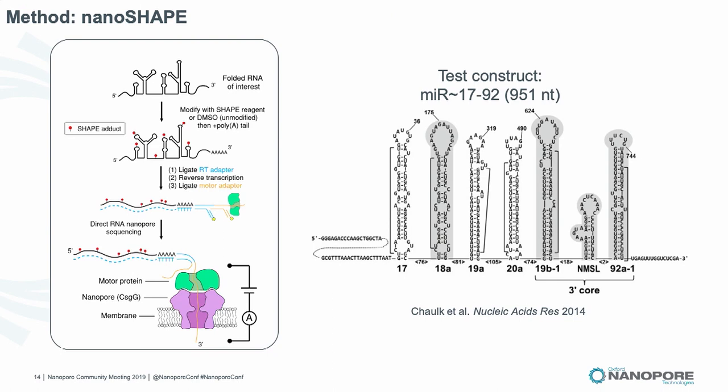We call this method NanoSHAPE. We apply the new chemical to a folded RNA, poly-A tail the RNA, and port this through the standard direct RNA protocol for nanopore sequencing. As a test construct we used a microRNA cluster, which has a fairly simple structure of six or seven hairpins — a nice construct we can in vitro transcribe to demonstrate the method, with a fairly well-known simple structure.